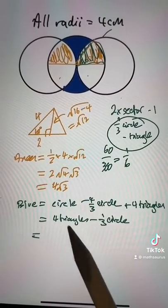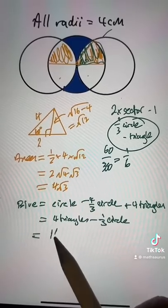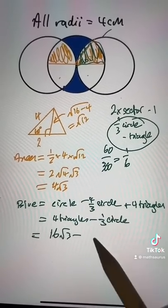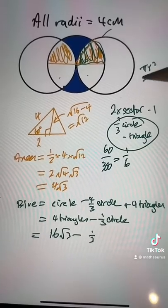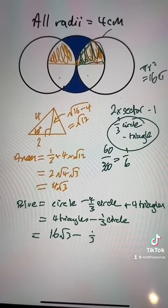We've already worked out that a triangle is 4 root 3, so that's 16 root 3. The circle is pi r squared, so with r equals 4, that's 16 pi.